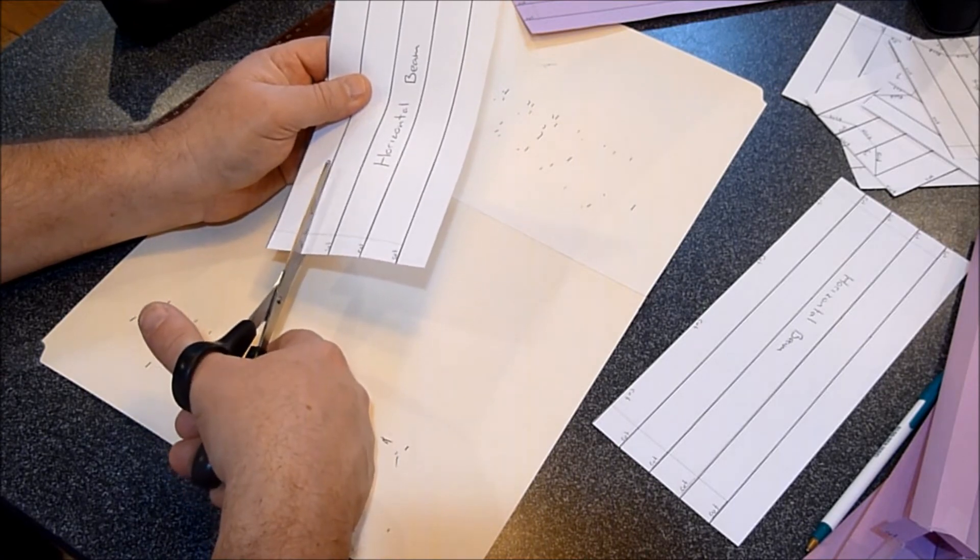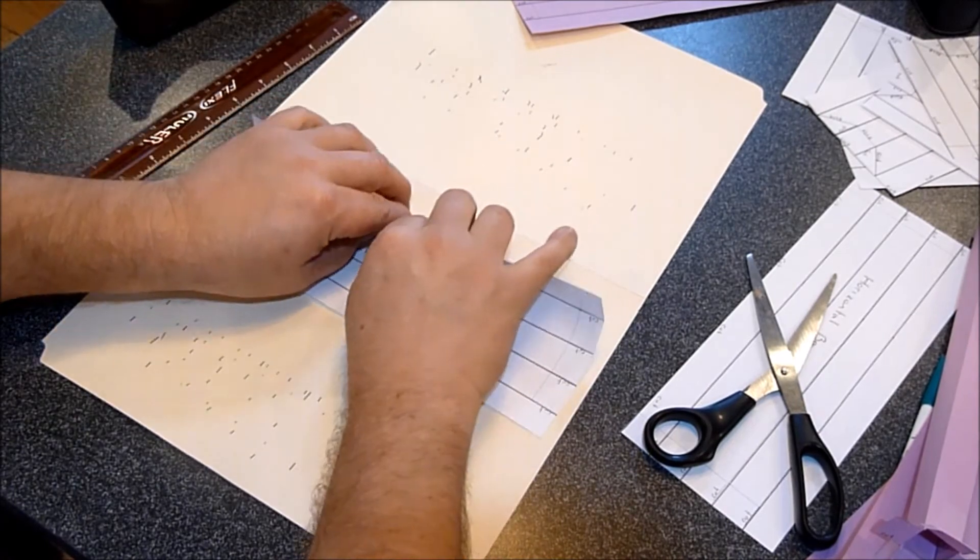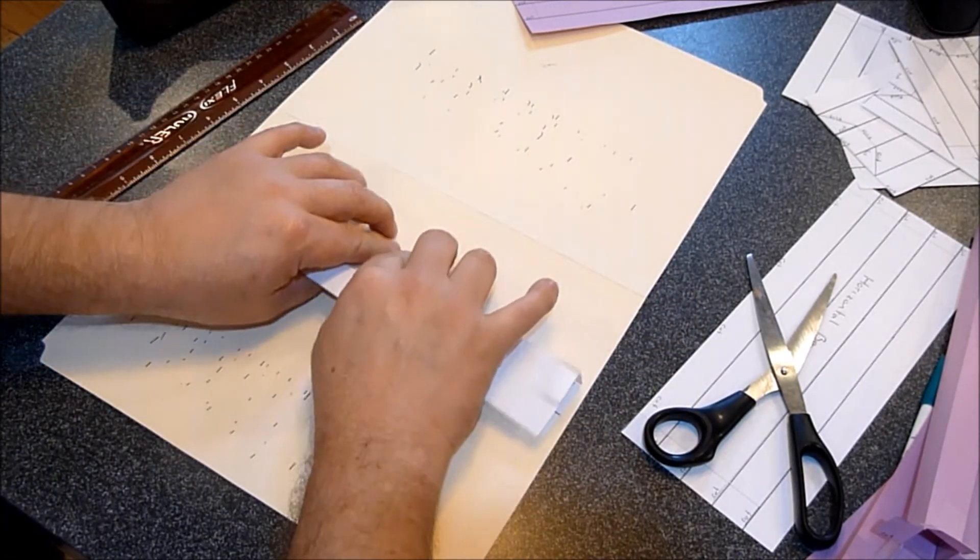That's the only real big difference between the vertical beam and the horizontal beam. Then you fold along the lines, creasing by pushing down with your finger just like we always do.